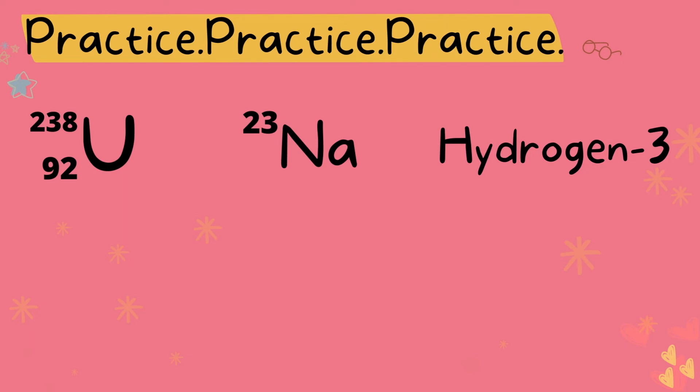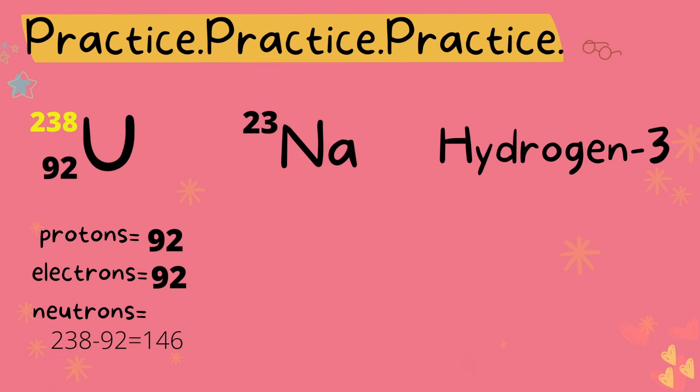Let's finish off with a few practice problems. I've written each practice problem in the three different ways you can see isotopes written. So the first way is in isotope notation. All the information you need to find the number of protons, electrons, and neutrons is given right here. We know the atomic number is 92, so the number of protons is 92, number of electrons is same, 92, and to find the neutrons we subtract 92 from 238 and we get 146.